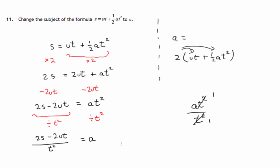And I think normally, formula with a subject A, you would write A first. So it's A equal 2S minus 2UT over T squared.